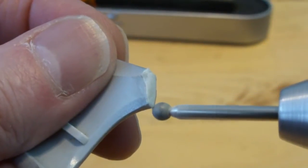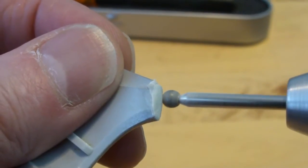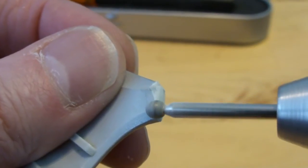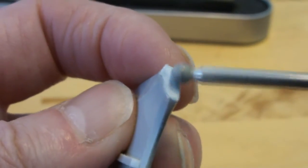To get a good weld with Bondic, you need a gap for the light, and to get a gap without changing the size of the part, you need to remove some material.